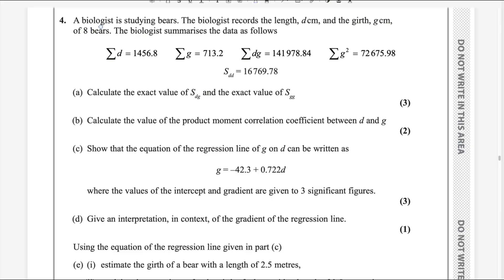A biologist is studying bears. The biologist records the length d centimeters and girth g centimeters of 8 bears. The biologist summarizes the data. Sum of d, sum of g — these values are given. Summary statistics for Sdd is also given. Calculate the exact value of Sdg and the exact value of Sgg.